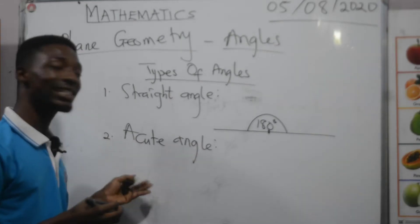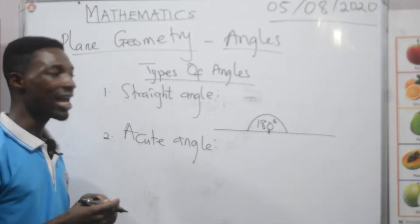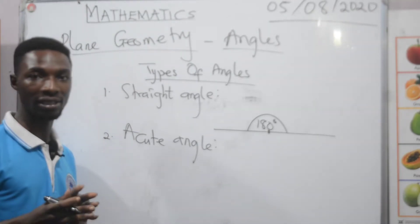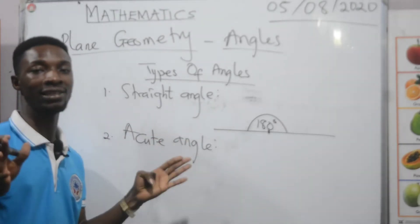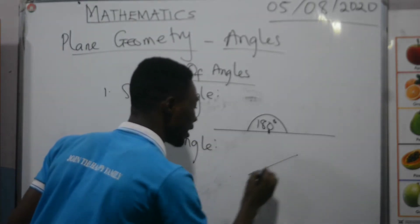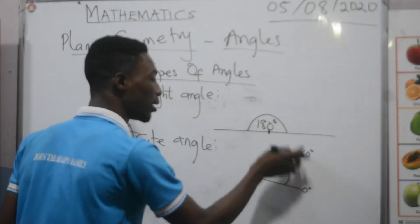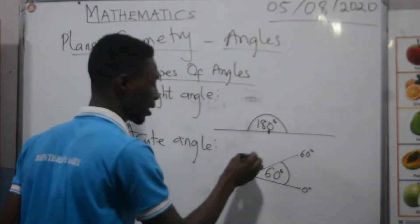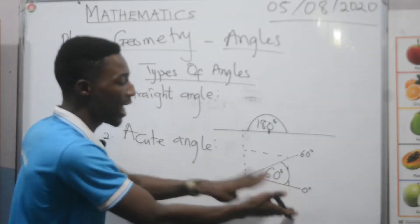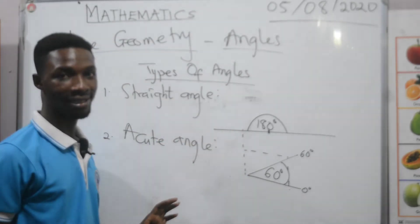The next type is the acute angle. An acute angle is an angle whose size is less than 90 degrees but greater than zero degrees. Whenever you have an angle measuring between zero and 90 degrees, we call it an acute angle. For example, a 60-degree angle is between zero and 90 degrees, so it is an acute angle.